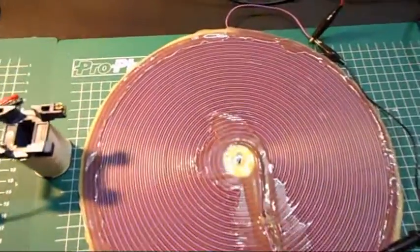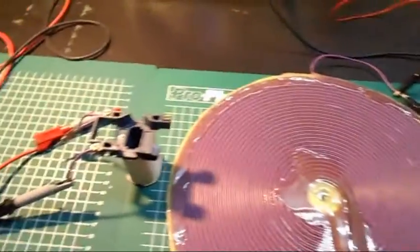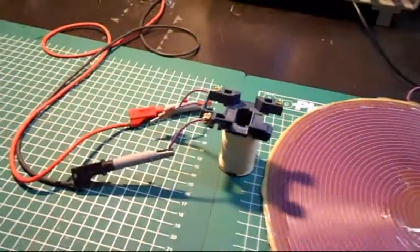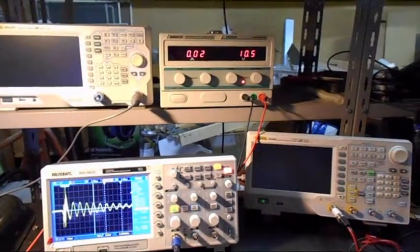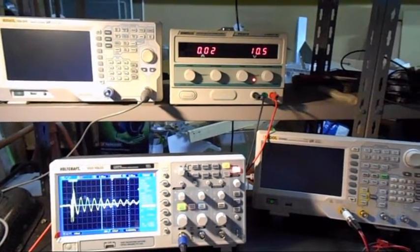Here you see the Tesla coil. There you see a coil from a relay. It's connected to a power supply at this moment giving 10 volts.